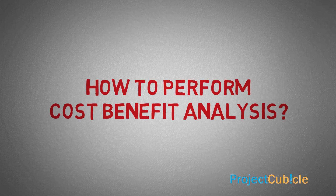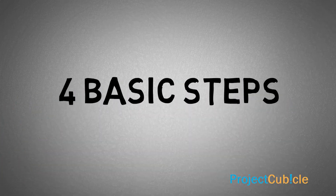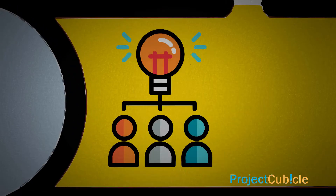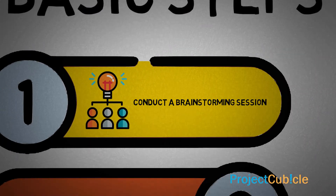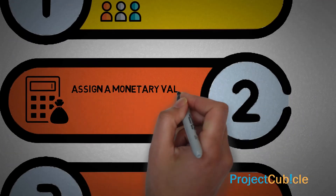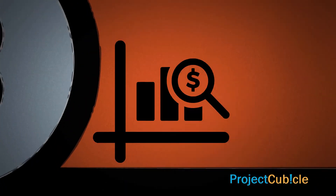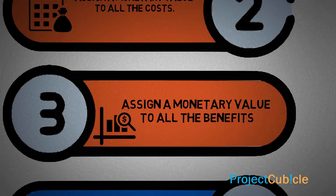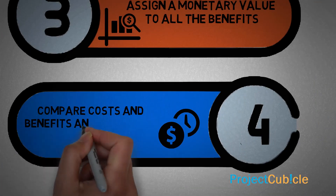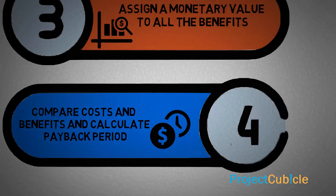To perform a cost-benefit analysis, follow four basic steps: conduct a brainstorming session, assign a monetary value to all the costs, assign a monetary value to all the benefits, and compare costs and benefits and calculate the payback period.